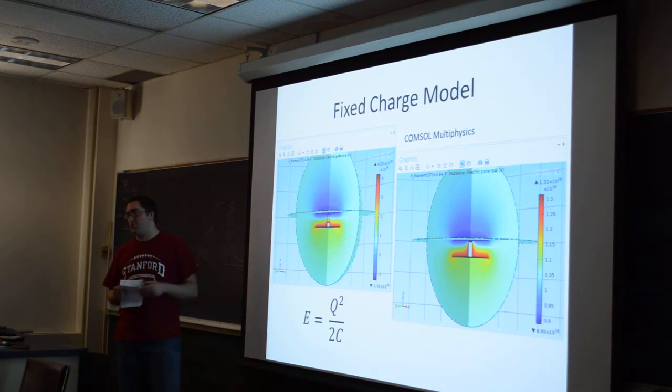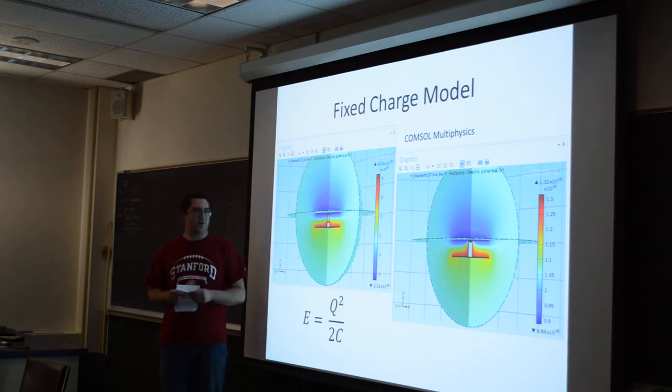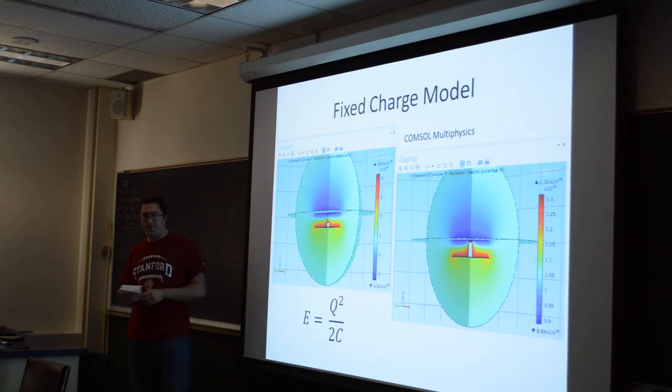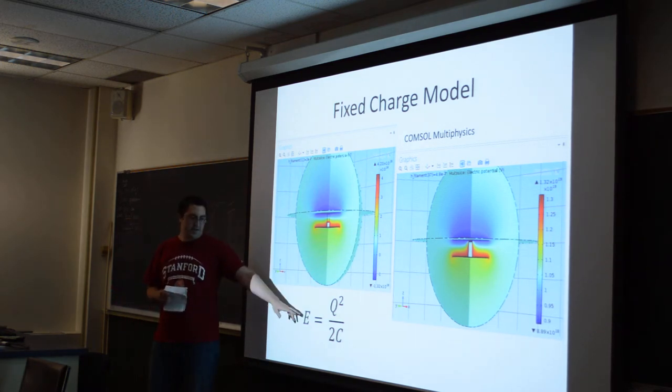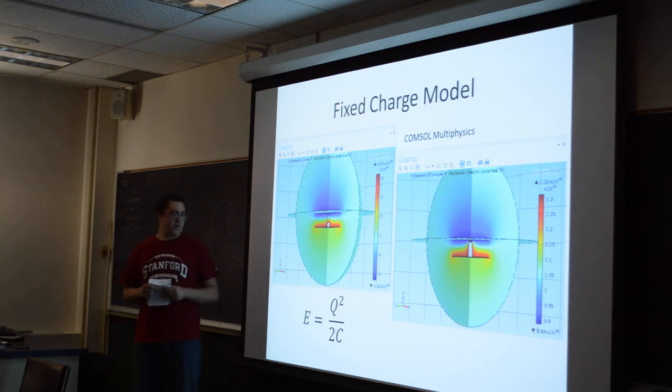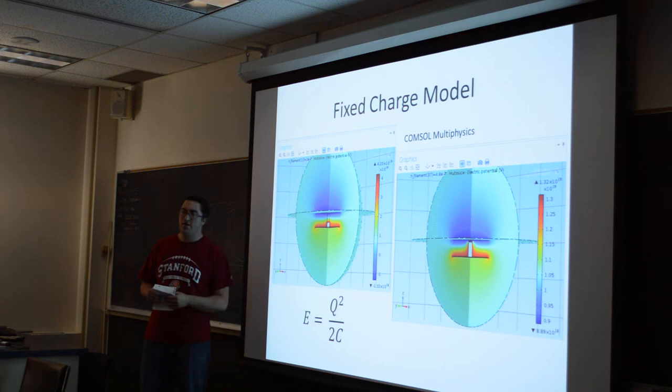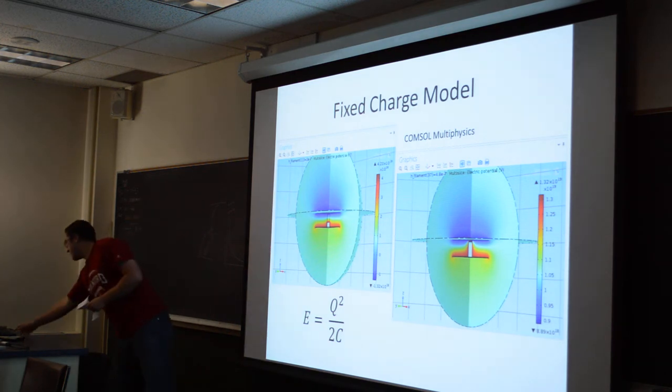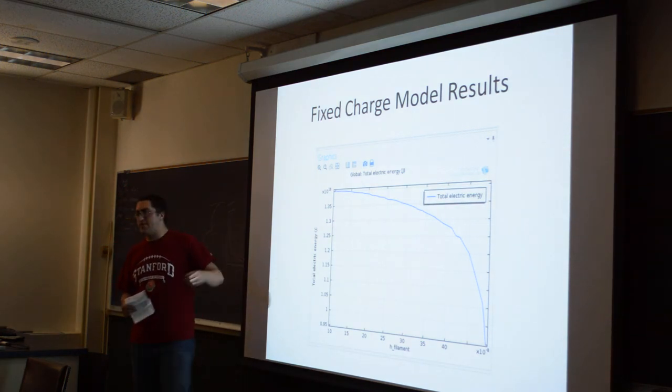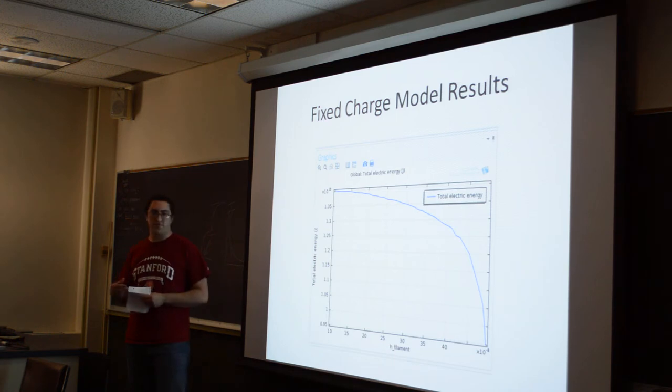First is the fixed charge model. These are two capacitor plates. I fixed the amount of charge on each of the plates. We expect the energy to behave according to this equation. When we increase the filament height, we're also increasing the capacitance. So if we increase the capacitance, we expect to see a lower total electric energy, and here are the results. Our predictions were correct. If we see a decrease in total electric energy, we can expect that the filament will be able to grow spontaneously, because the growth of the filament reduces the total electric energy system.